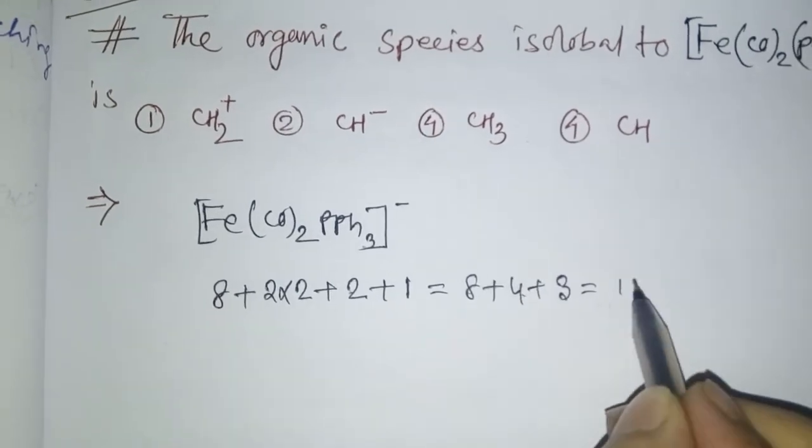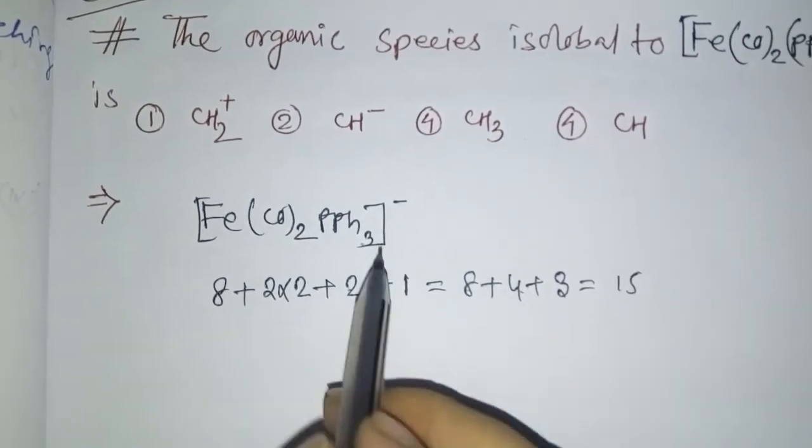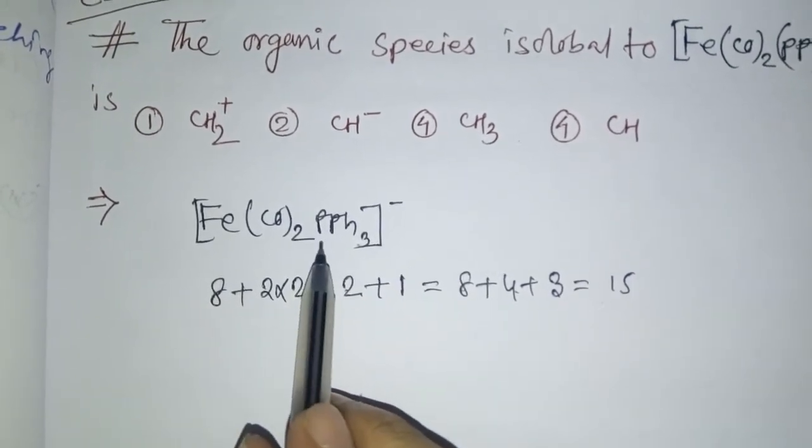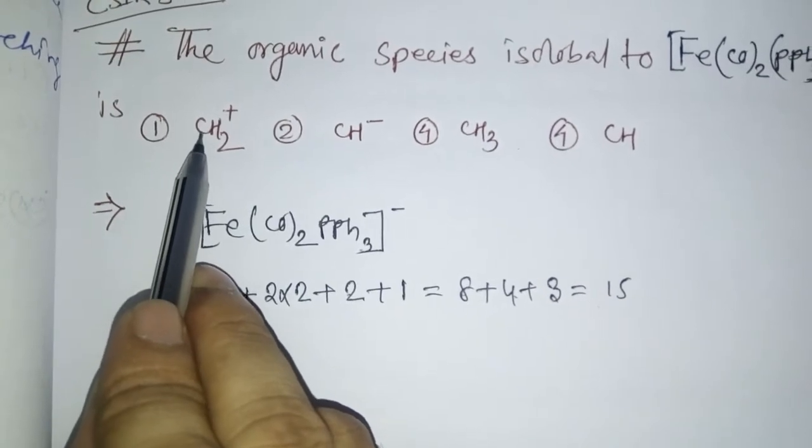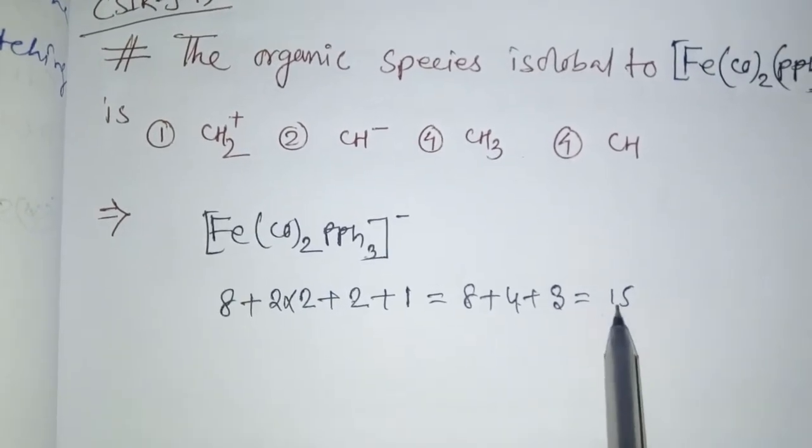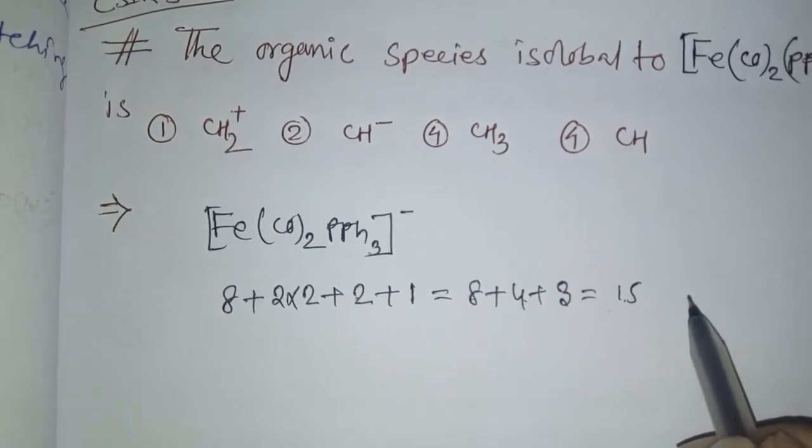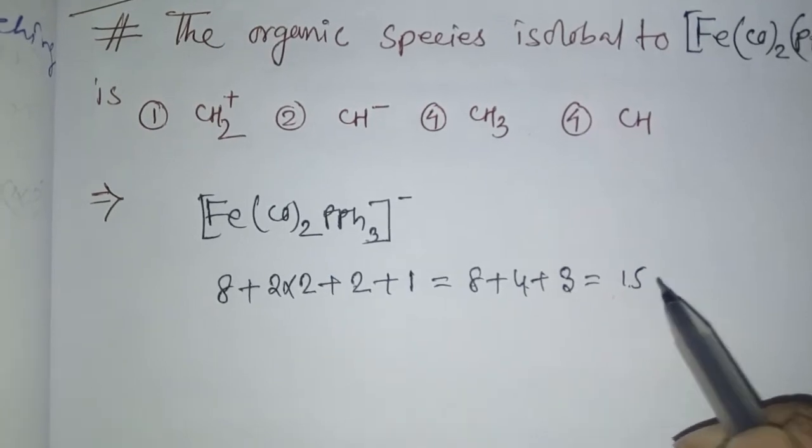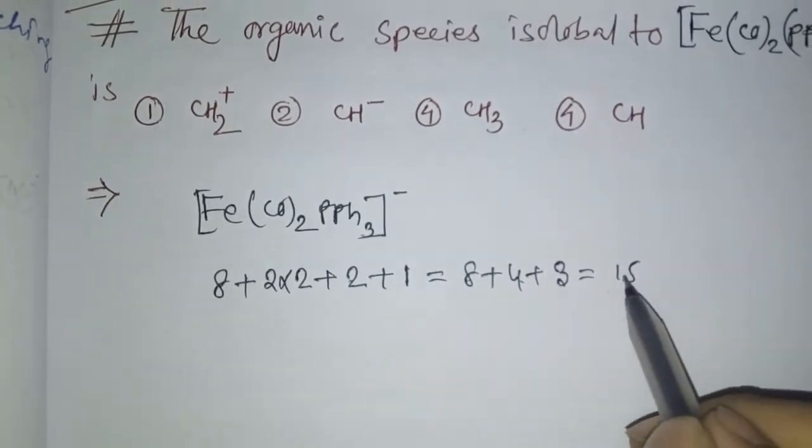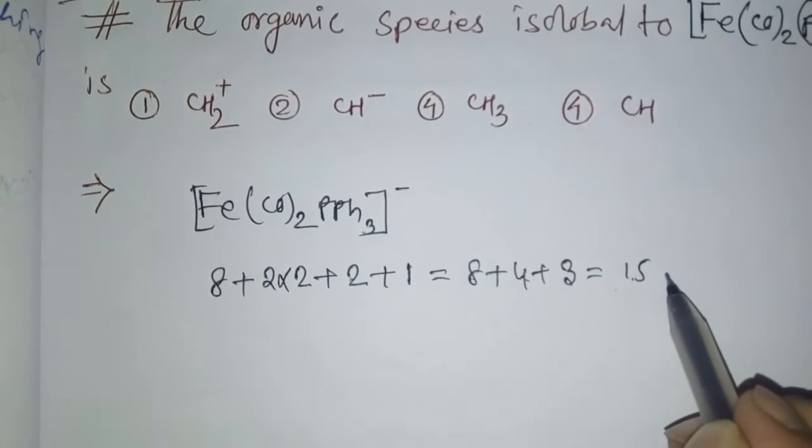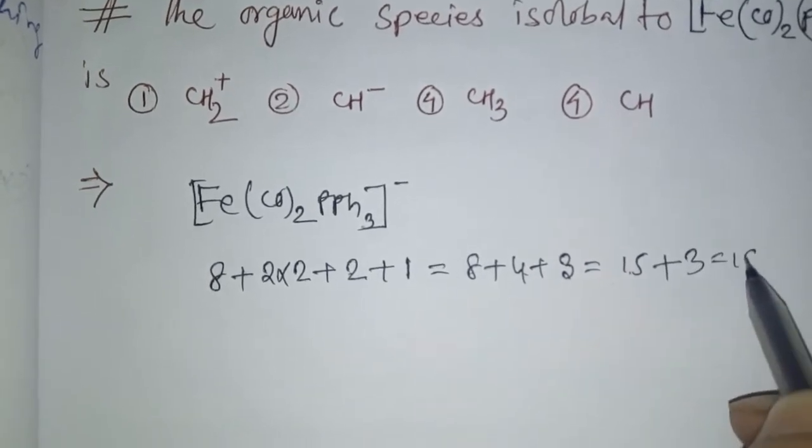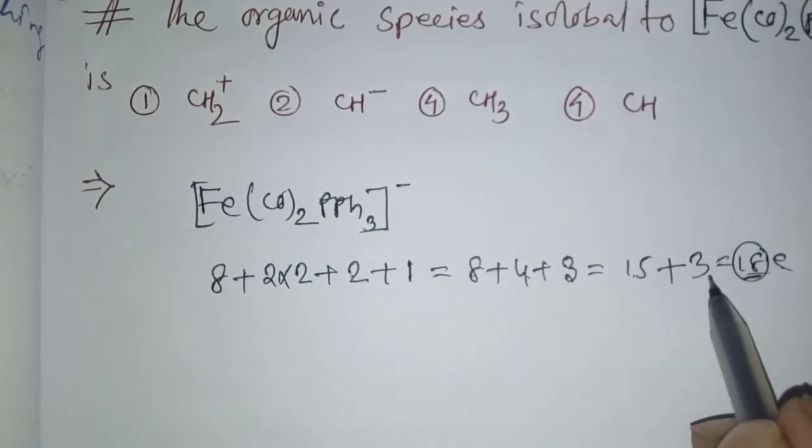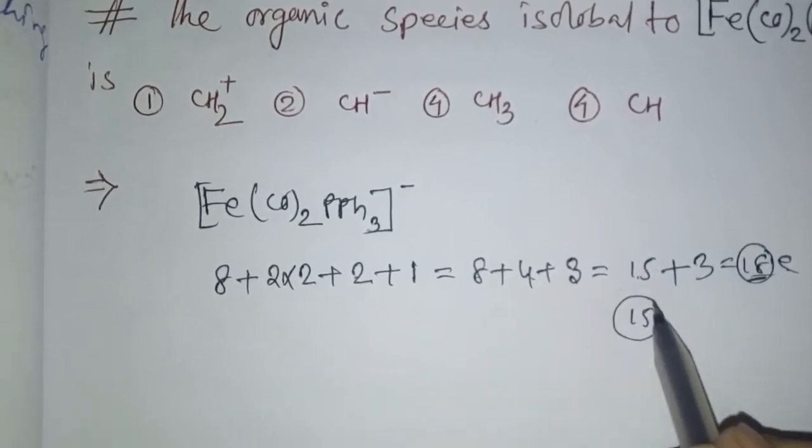This is 15 electrons for the transition metal. For 18 electrons, how many are needed? If we add 3 more electrons, 15 plus 3 equals 18. This gives us 18 electrons. So this transition metal complex needs 3 more electrons to be stable at 15.